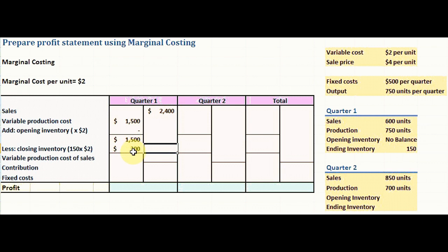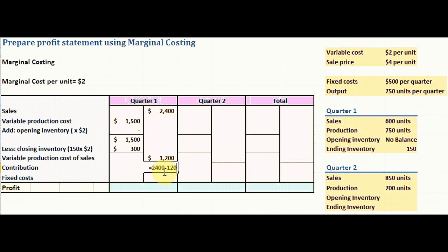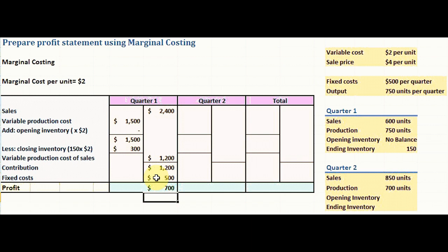The variable production cost of sales is $1,500 minus $300, which equals $1,200. Contribution is sales minus variable production cost of sales: $2,400 minus $1,200 gives a contribution of $1,200. Fixed cost is $500, so profit is contribution minus fixed cost: $1,200 minus $500 gives a profit of $700 for quarter one.